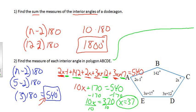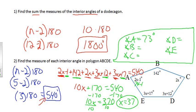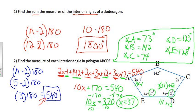Plugging x = 37 back in: Angle A = 2(37) − 1 = 74 − 1 = 73 degrees. Angle B was already known as 142 degrees. Angle C = 2(37) = 74 degrees. Angle D = 3(37) + 12 = 111 + 12 = 123 degrees. Angle E = 3(37) + 17 = 128 degrees. Checking: 73 + 142 + 74 + 123 + 128 = 540 degrees. ✓